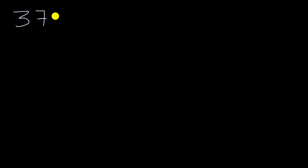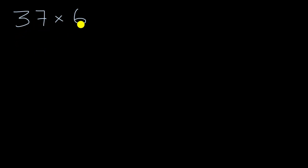In this video, we're going to dig a little bit deeper and try to understand how we might multiply larger and larger numbers, and in particular, we're going to focus on multiplying two-digit numbers times one-digit numbers. I encourage you to pause this video and see if you can have a go at this — try to figure out what 37 times six is with some type of method.